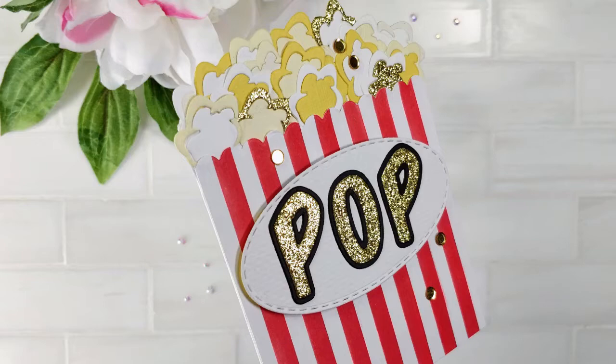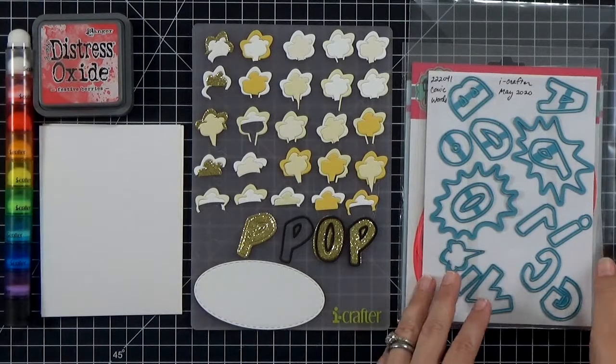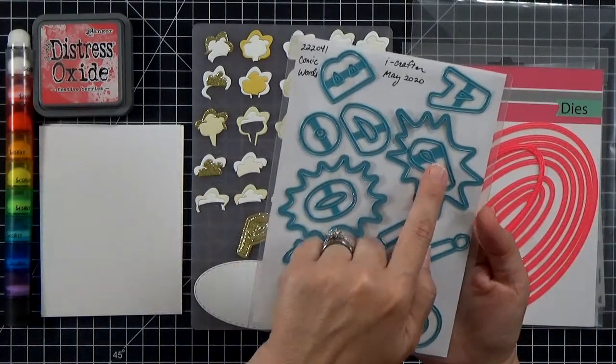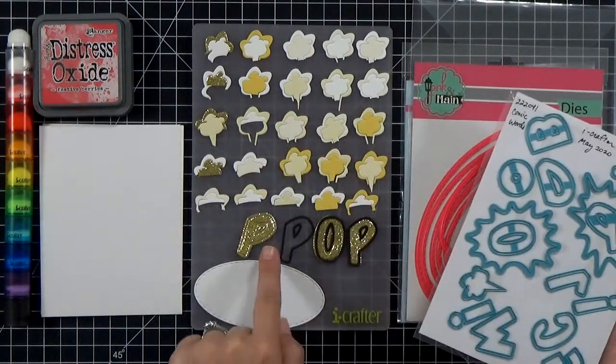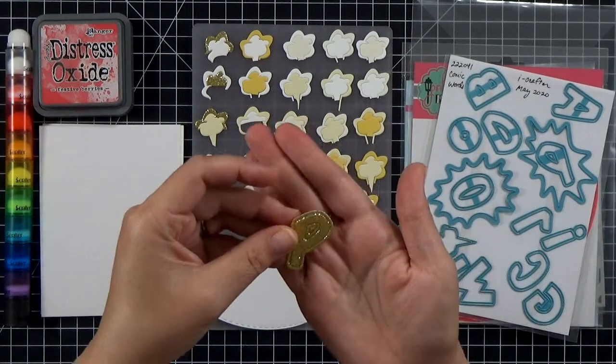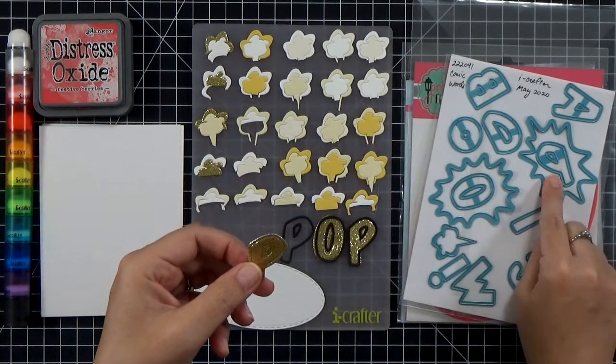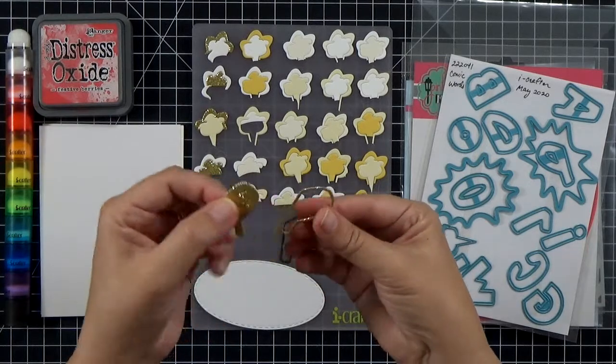There is no stamping and no coloring. I did actually do a little bit of ink blending through a stencil, but you guys know that that's fast. So I'm a big proponent of stretching your supplies and trying to use dies in new and different ways. I grabbed the comic words die set from iCrafter and I cut out the letters to spell out pop.